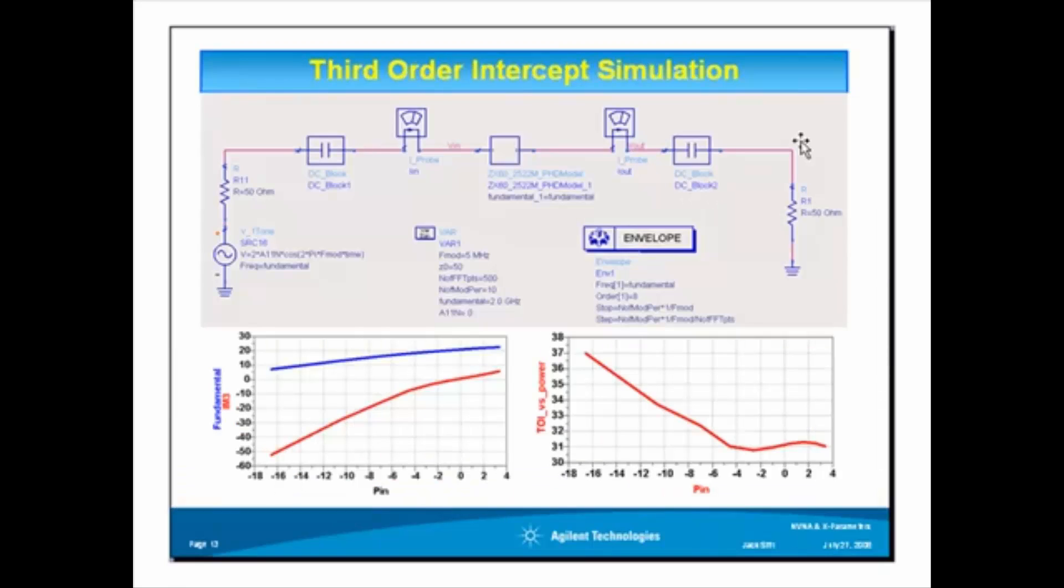This is an example of ADS circuit envelope simulation used to extract the third order intermodulation distortion IM3 and the third order intercept TOI versus power using measured X-parameters and generated PHD model for ADS. It's a simple setup: you put the device under test here and you put the sources, the two tones in envelope, and you can extract the IM3s and TOI third order intercept versus power.